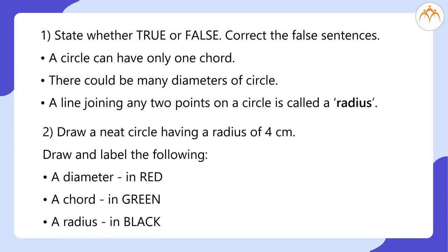Draw a neat circle having a radius of 4 centimeters. Draw and label the following: a diameter in red, a chord in green, a radius in black.